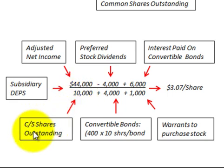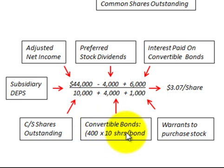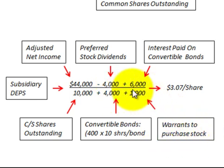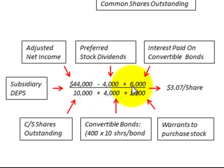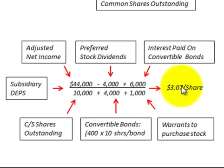We divide the numerator by common shares outstanding of 10,000. We also add shares from convertible bonds: 400 convertible bonds times 10 shares per bond gives us 4,000 shares. Then we add warrants to purchase stock of 1,000 shares. Adding up the share amounts — 10,000 plus 4,000 plus 1,000 — and dividing into the numerator gives us $3.07 per share, which is the subsidiary's diluted earnings per share.